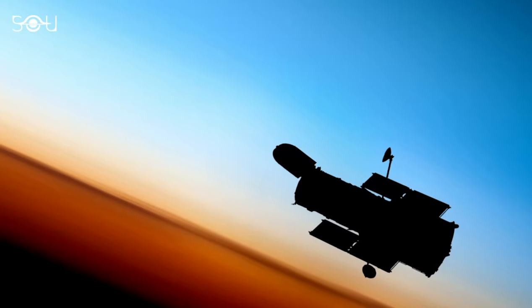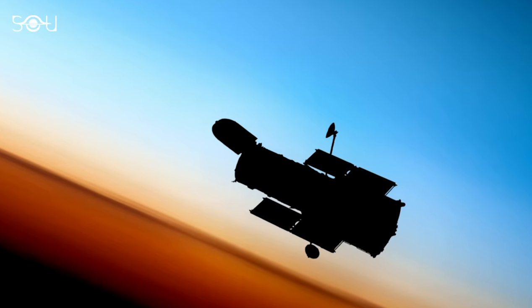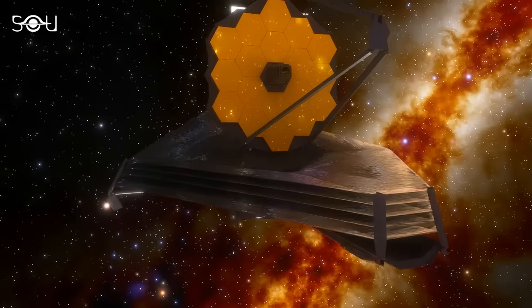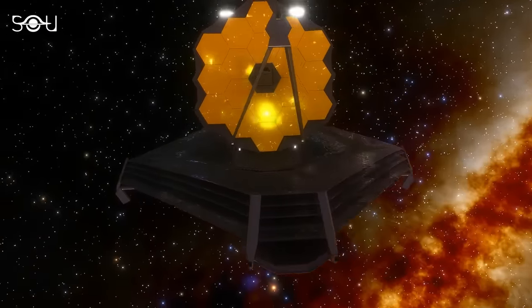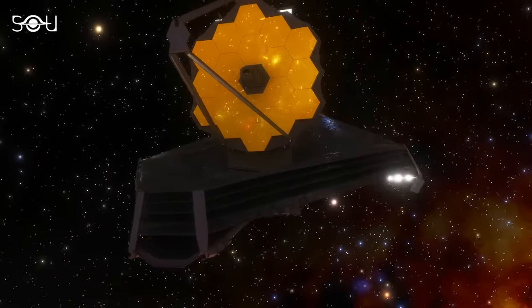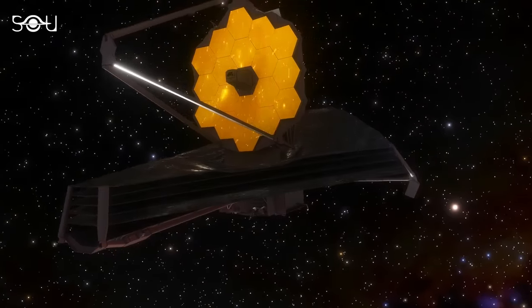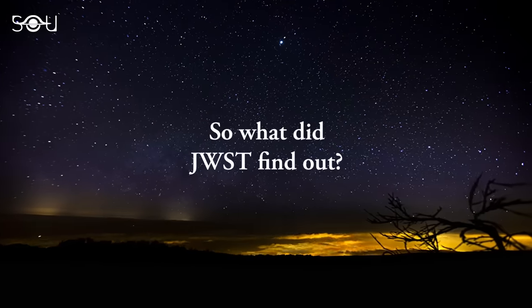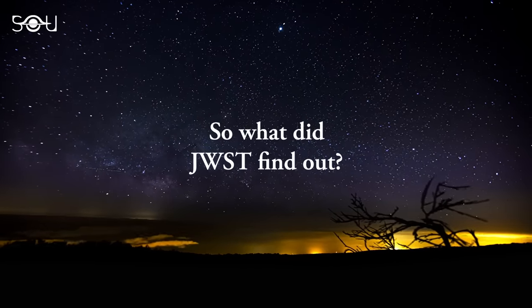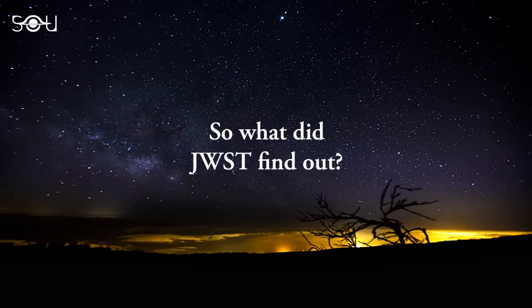Hubble couldn't tell us everything about this faraway star because of its limits. So scientists used the James Webb Space Telescope to learn more about Earendel. And here's what they found out about it. There are three significant points to note in the observations by the James Webb Space Telescope. The first is the star's redshift.